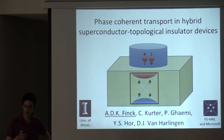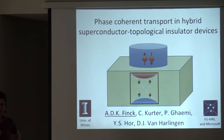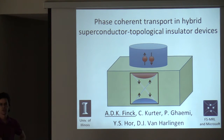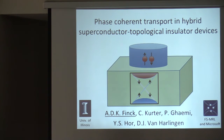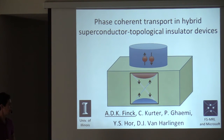First I'd like to thank Alex and the other organizers for inviting us all to this wonderful conference. This talk will describe the work I did in Dale Van Harlingen's lab at the University of Illinois as a post-doc in order to try to engineer a topological superconductor. We do that by taking a conventional superconductor like niobium and placing it in contact with the three-dimensional topological insulator bismuth selenide. I'll describe our efforts to probe phase-coherent transport through these hybrid systems in order to eventually create an interferometer that can detect the Majorana bound states hoped to exist in this type of system.